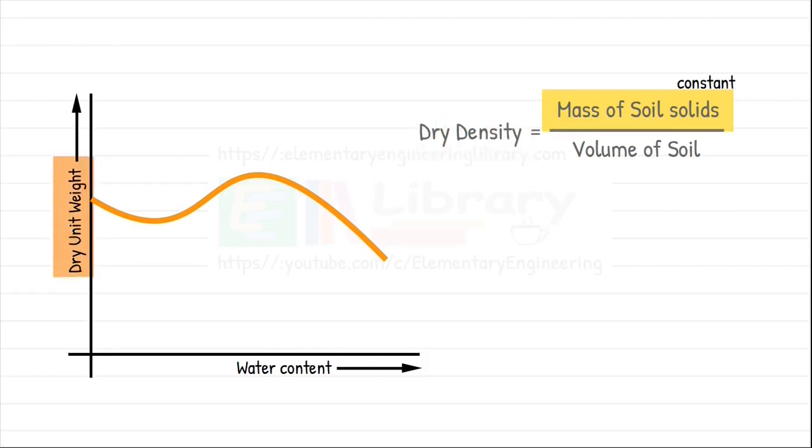By dry density formula we can see we are keeping the soil solids constant throughout the experiment. But dry density or dry unit weight is decreasing with increase in water content. That means volume of soil must be increasing to keep the equation correct. This increase in volume of sand due to increase in moisture content is known as bulking of sand.